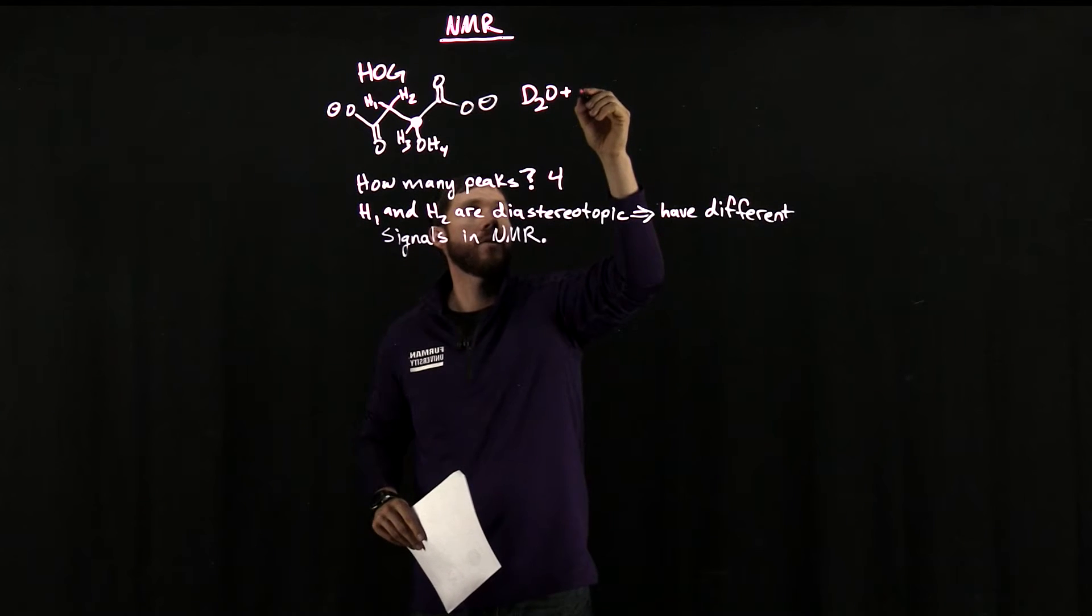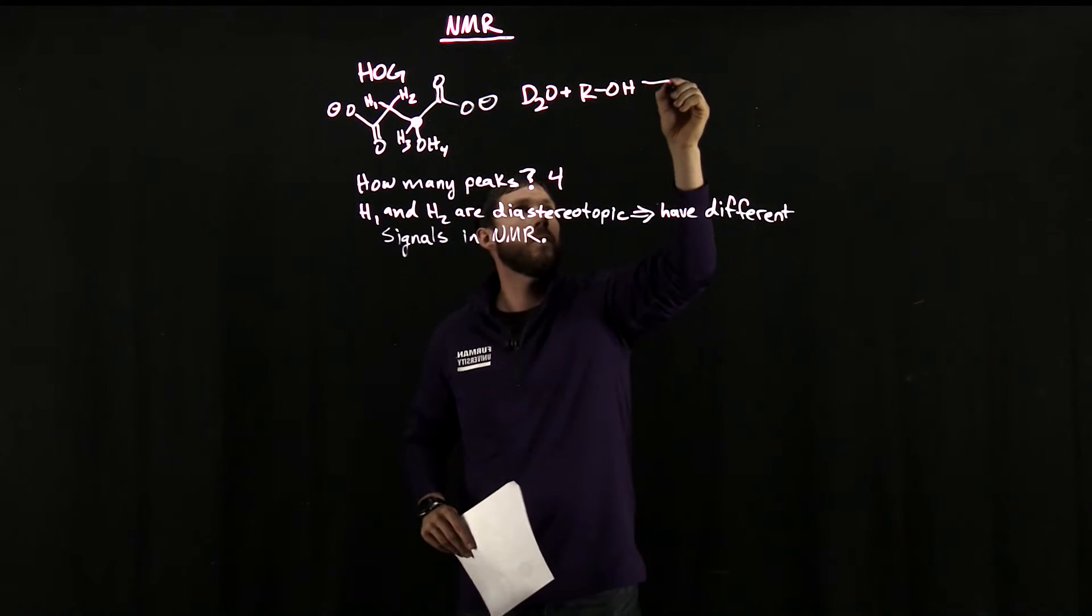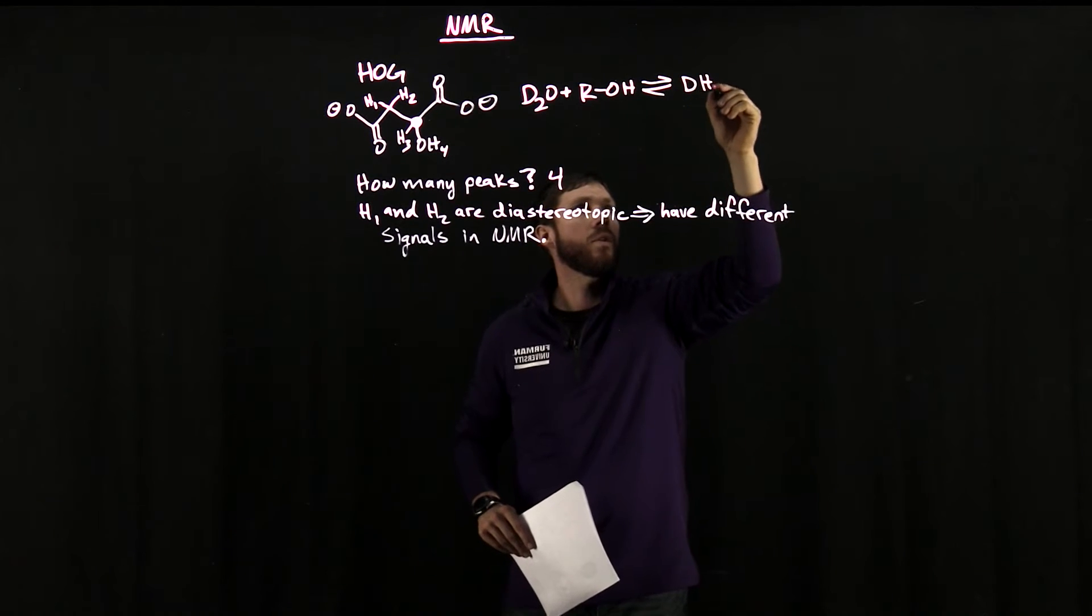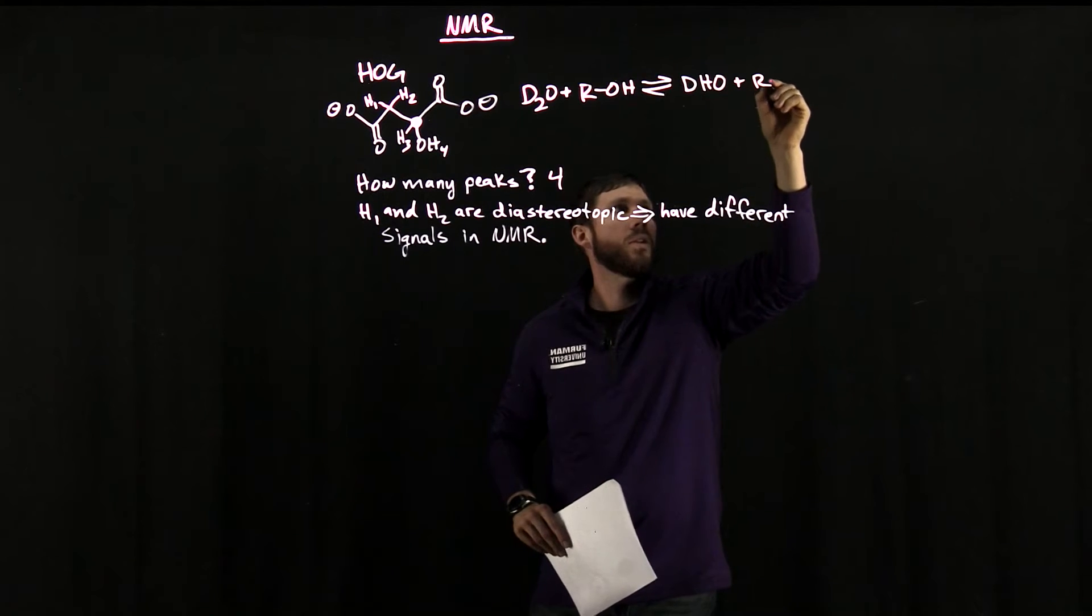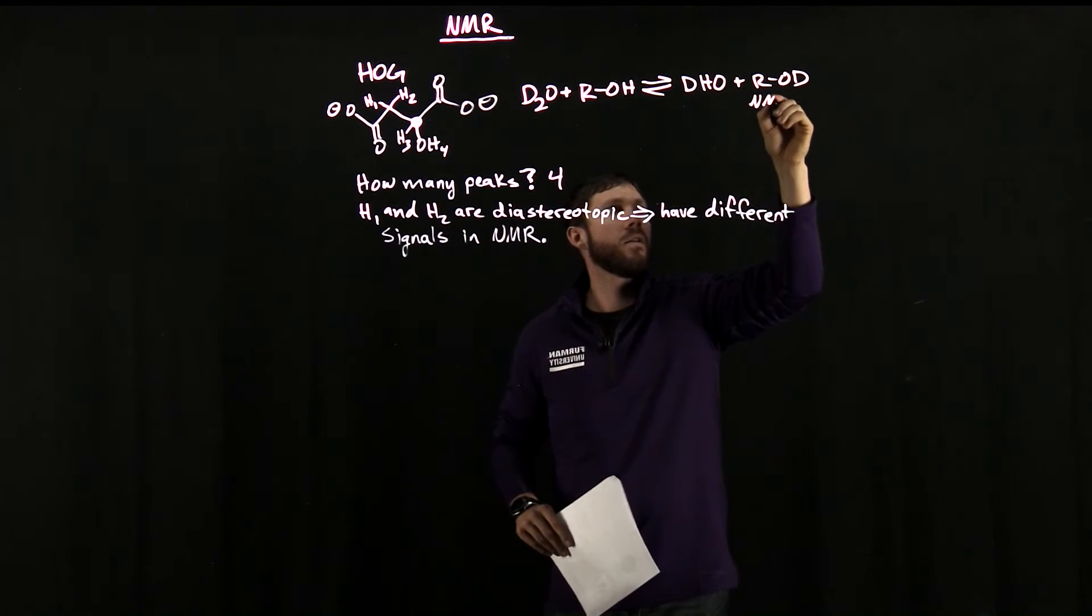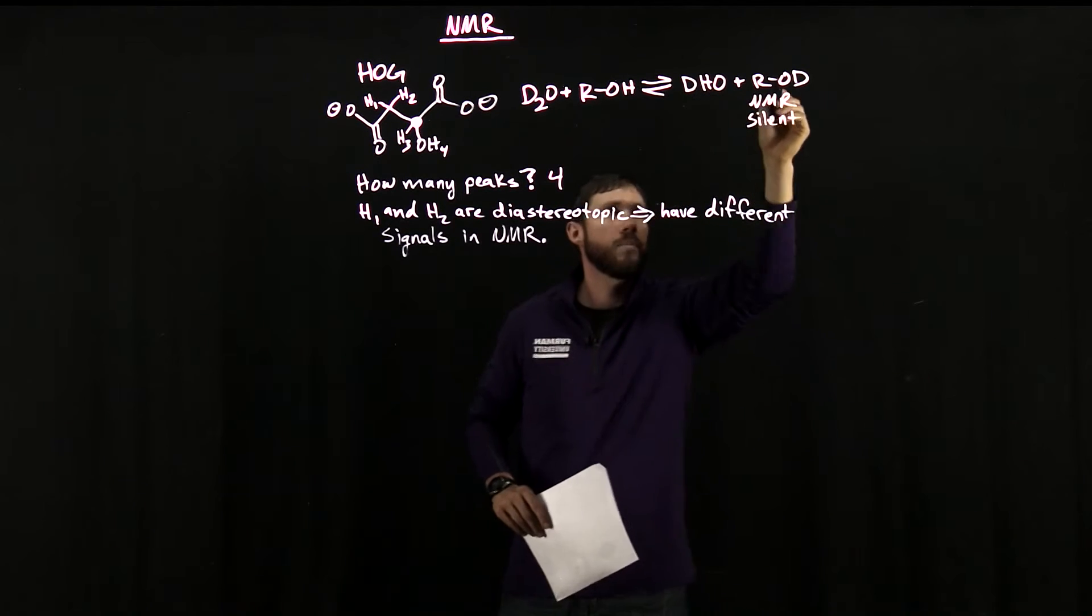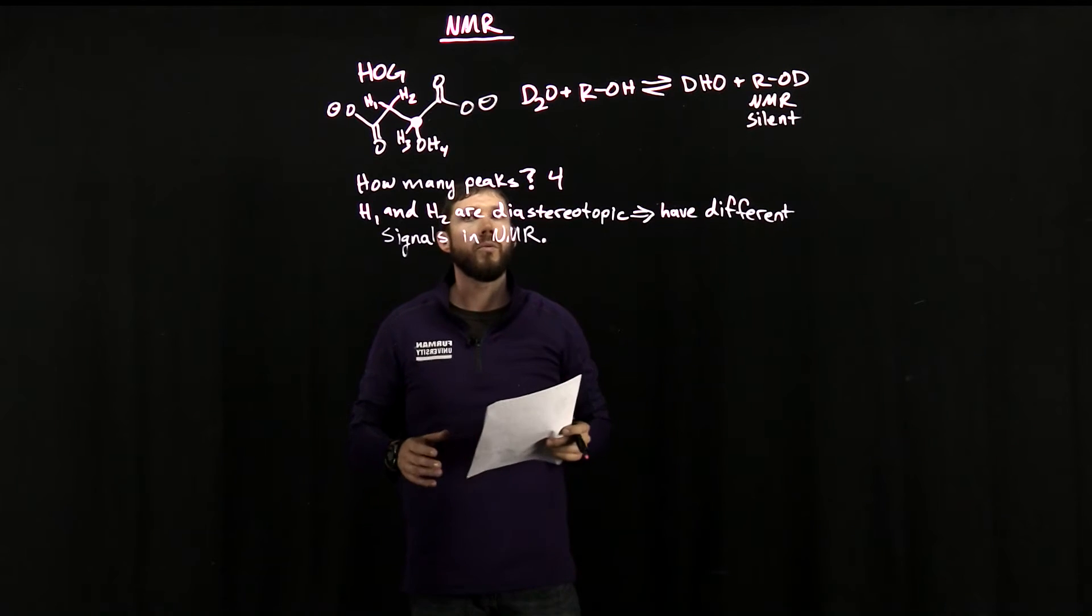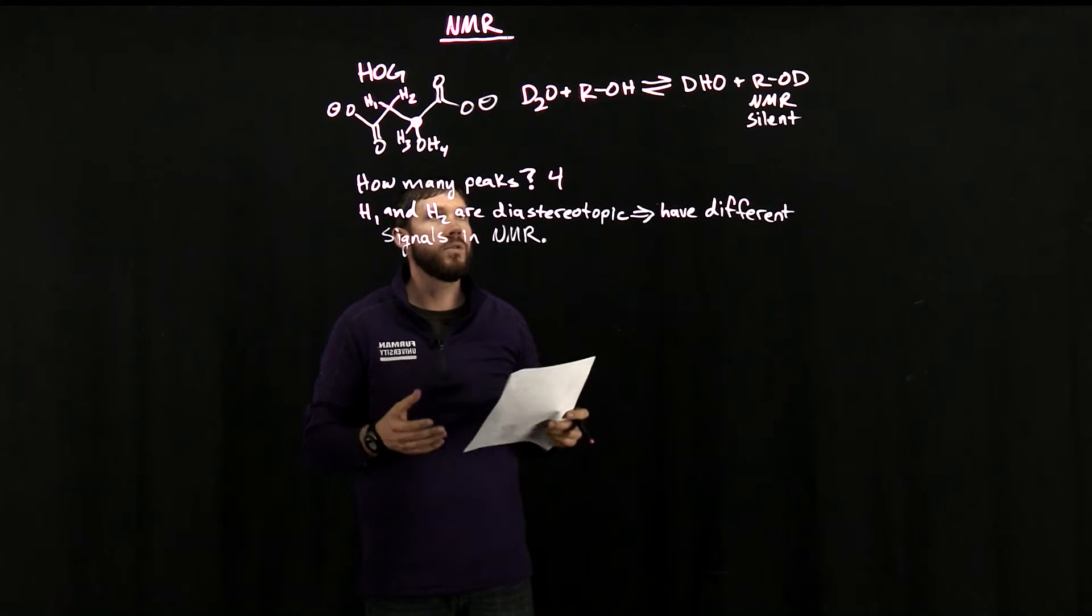So if we were to combine these two, like we did in our NMR sample, there's an equilibrium that exists that results in the exchange of one of the deuteriums on the D2O with a hydrogen and replaces the hydrogen on the alcohol with a deuterium. And now deuterium is NMR silent. So we would not expect to see this deuterium alcohol species in the NMR.